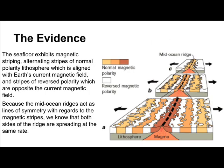The seafloor exhibits magnetic striping — alternating stripes of normal polarity lithosphere, which is aligned with Earth's current magnetic field, and stripes of reverse polarity, which are opposite the current magnetic field. Because the mid-ocean ridges act as lines of symmetry with regards to magnetic stripes, we know that both sides of the ridge are spreading at the same rate.